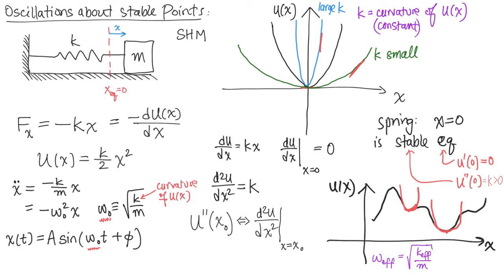K-effective is going to be related to, but not always exactly equal to, the second derivative of the potential evaluated at the equilibrium point. We'll see that play out in our next example, where we look at a pendulum oscillating in a plane — which is not exactly the same as a mass on a spring, but it's very close. We'll see how we can make approximations to make these two systems look quite equivalent.